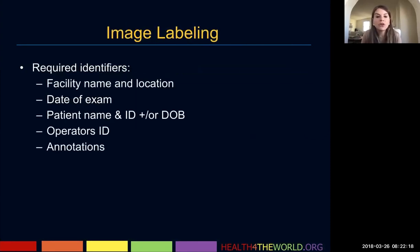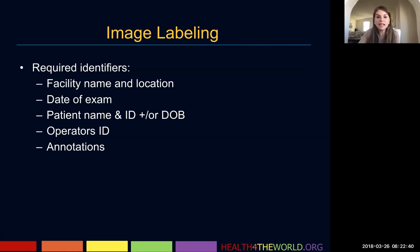On your ultrasound images, on the machine and on the images themselves, you want to label where the ultrasound was performed, the date of the ultrasound exam, the patient name and their ID and/or date of birth, and the operator's ID. In our group, we always put the initials of whoever the doctor is doing the ultrasound, as well as the annotations for your lesions.